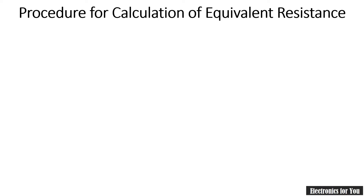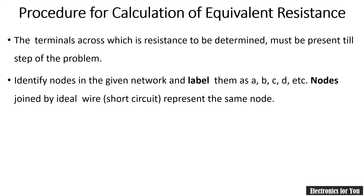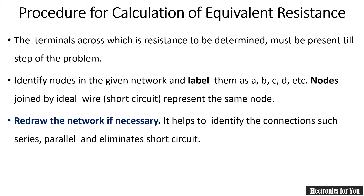The first point is we have to keep the terminals across which we are measuring the equivalent resistance present till the end of the problem. The next step is to identify the nodes and label them. We will identify the nodes in the problem and label them as A, B, C, D, E, etc.